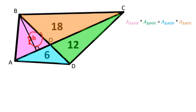Let's draw the altitude H from angle B to side AC. The area of a triangle is equal to one half the product of its base and its altitude. Here is the formula of the area of the pink triangle, and here is the formula of the area of the orange triangle.